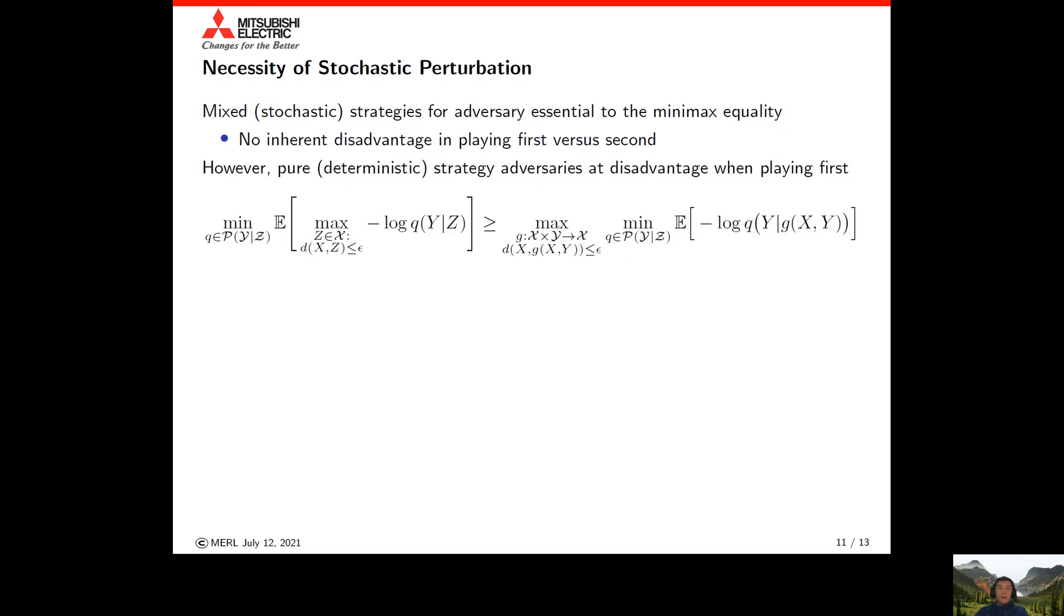For our min-max equality result, it was essential that we generalize the adversary to allow it to have mixed or stochastic strategies. This min-max result, by being able to flip the order of the min and max, illustrates that there is no inherent disadvantage to the concept of playing first or playing second with respect to the adversary.